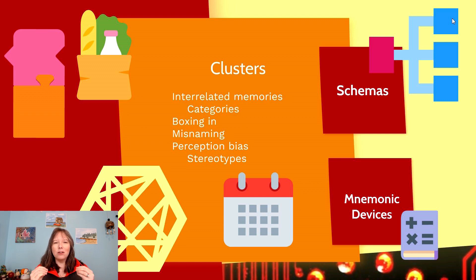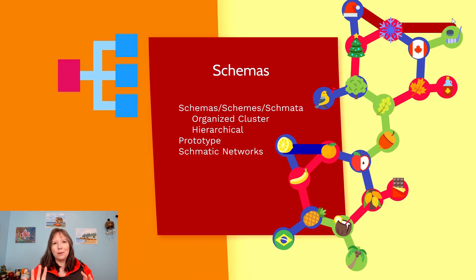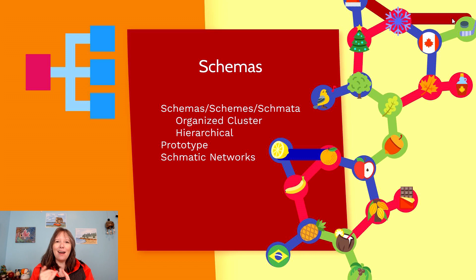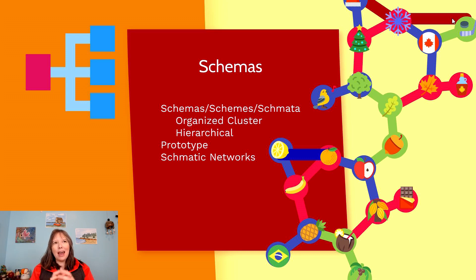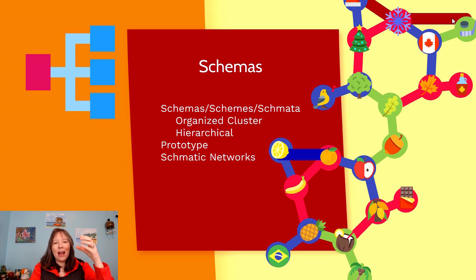With clustering, we are starting to put things into schemas or schemes. A few words in psychology often used interchangeably are schemas, schemes, and schemata — these mean ideas or categories. When we organize our clusters, they can be nested: a cluster for fruits and vegetables fits within a higher cluster known as food. Schemas have hierarchy and layers, whereas clusters don't always. So schemas are clusters with layers.